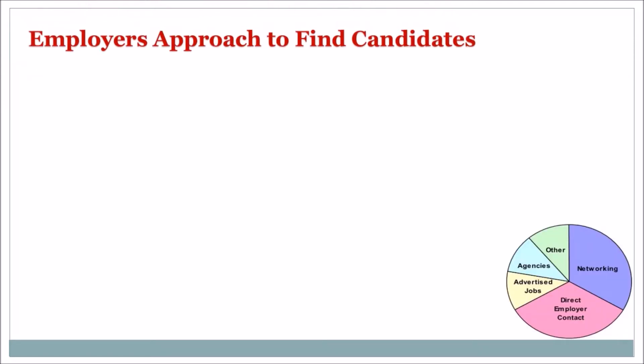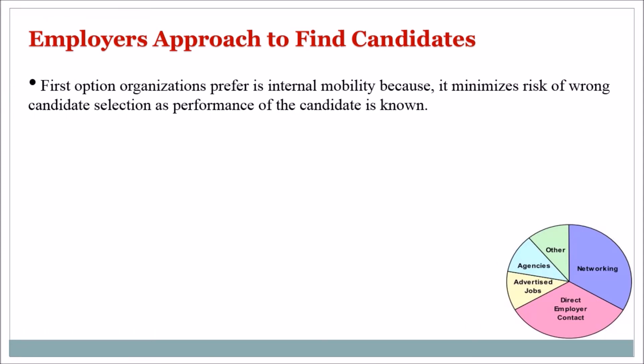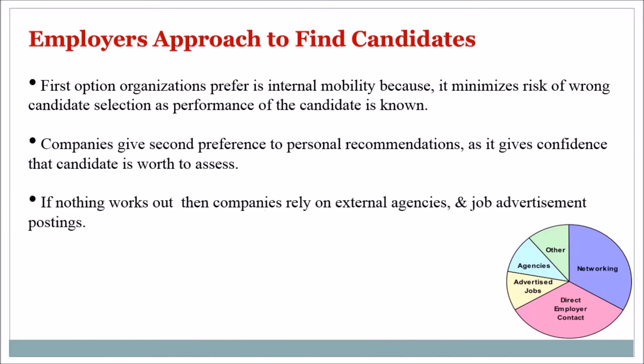Employer's approach to find candidates: The first option organizations prefer is internal mobility, because it minimizes the risk of wrong candidate selection as the performance of the candidate is known. Companies give second preference to personal recommendations, as it gives confidence that the candidate is worth hiring. If nothing works out, then companies rely on external agencies and job advertisement postings.